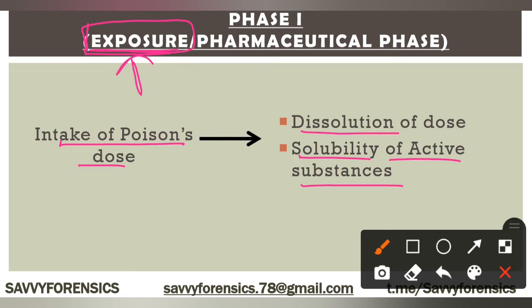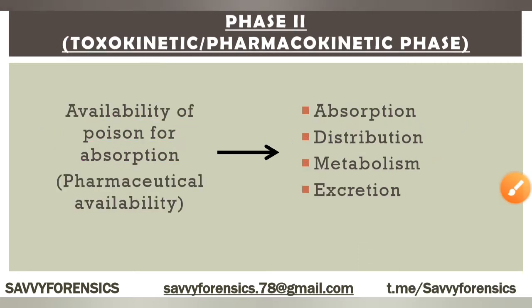Here we have poison which will start the solubility process. Basically here we have the chemical. This is why we also call it the pharmaceutical phase. So we have two names which are very important: exposure phase or pharmaceutical phase. This is the intake of the poison dose — the chemical — which is the starting phase. It involves the solution of the dose and solubility of active substances.